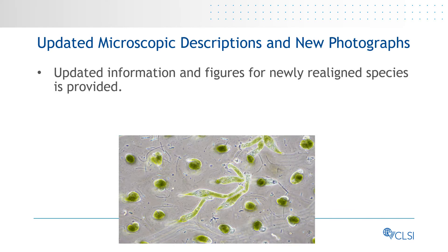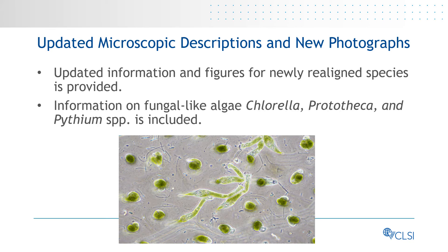Also included in this edition is new information on algae that produce fungal and yeast-like cells in clinical specimens and can be mistaken for fungal elements. Therefore, information and photographs of Chlorella, Prototheca, and Pythium species are provided.